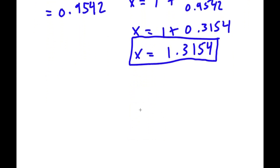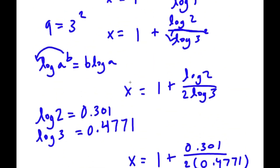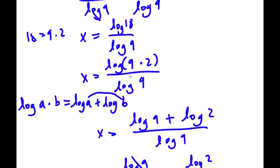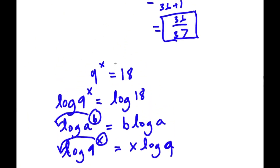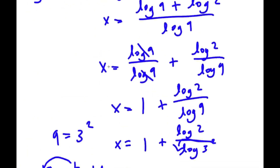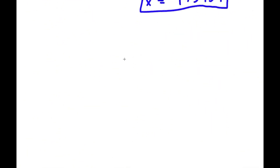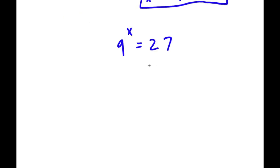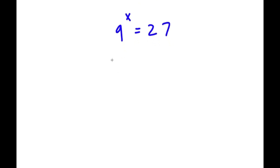Now I'm going to give you guys a similar problem which is much easier and doesn't require any logarithms. Our original problem was 9 to the power of x is equal to 18. Now the new problem is 9 to the power of x is equal to 27. Pause the video and try to solve this. So we have 9 to the power of x equals 27.